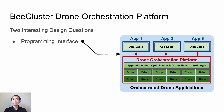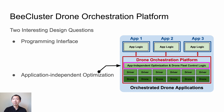There are two very interesting design questions in this drone orchestration platform. One is about the programming interface, which determines what types of applications can be supported and how easy it is to develop them. The other is about the optimization supported by the orchestration platform. The optimization is important because all drones have very limited battery time, and battery replacement is often time consuming. The optimization has to be independent of the applications, because the platform should be general-purpose and needs to support different applications at the same time. The question is: what optimizations can we support?